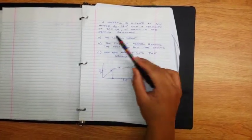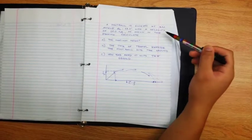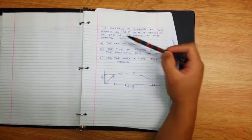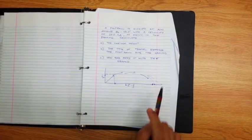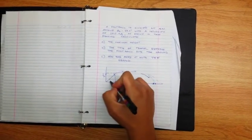A football is kicked at an angle of 37 degrees with a velocity of 20 meters per second. I'll show you the drawing. Here's the 37 degree angle.